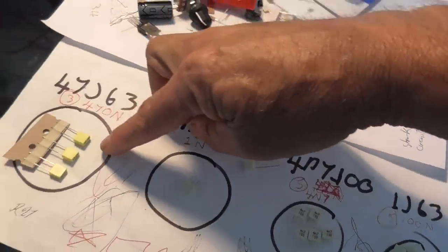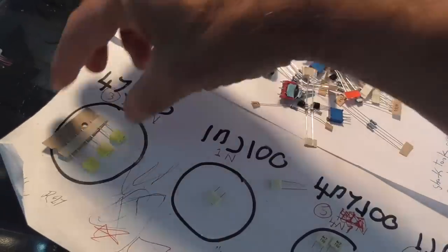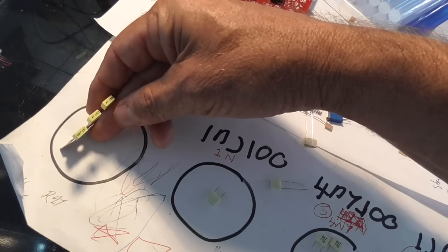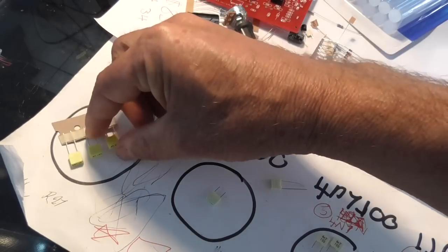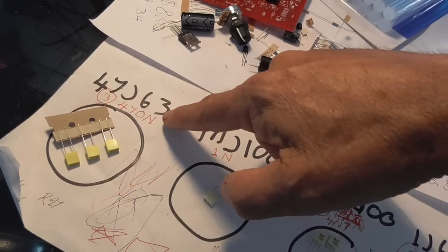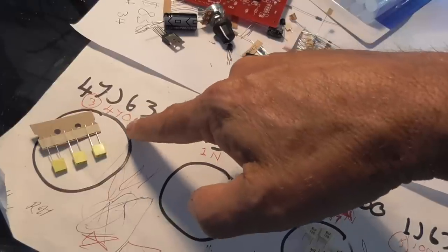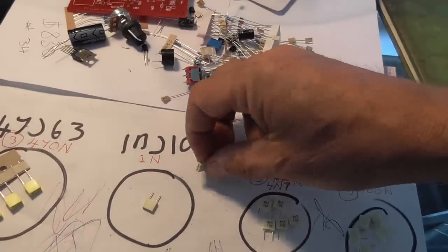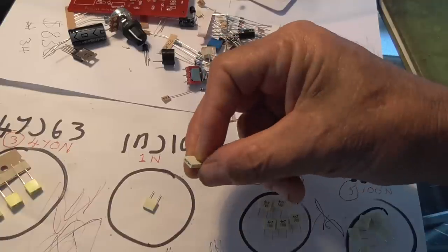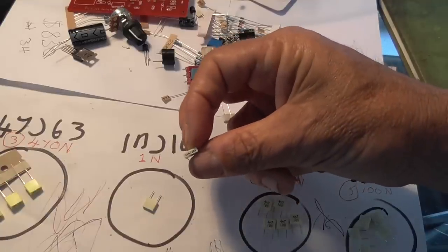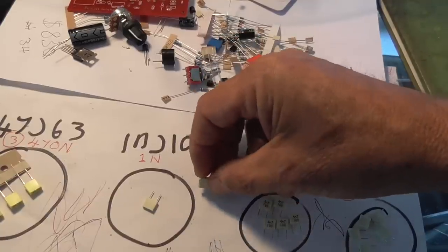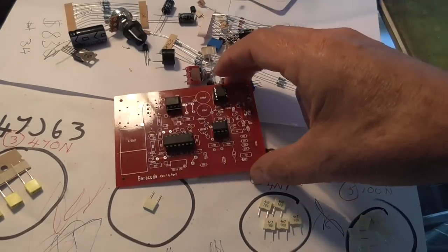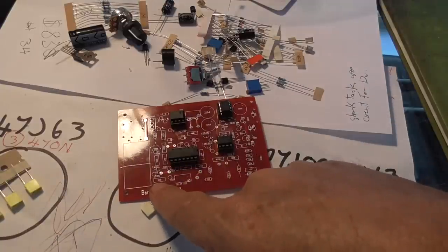Now, you've got 3 of these, .4J63, or 470N. Now this one's all on its own, that goes in a very special spot on the board. That's a 6N8. Now that 6N8, if you have a look at the board, it goes right down there.